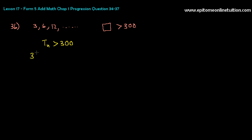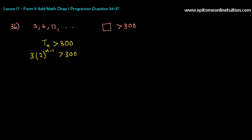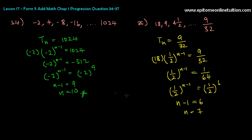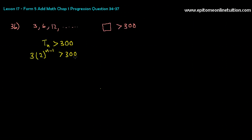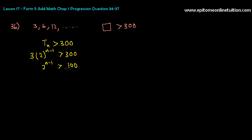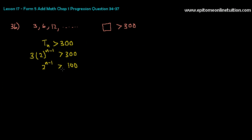You do the same thing: A is 3, R is 2, so 3 times 2 to the power n minus 1 is bigger than 300. Shift the 3 over — that's 100. So 2 to the power n minus 1 is bigger than 100. In this case, you will get an answer with a decimal, which is fine. N is the number of terms — you cannot have a 7 and a half term. But here you can have a decimal because it's bigger than, so you round up. You cannot find the base of 100 as base 2, so you log 10 on both sides.